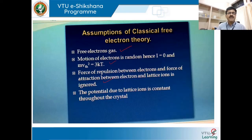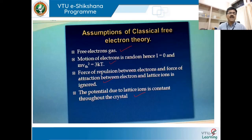The last assumption is that when you apply an electric field, the potential due to the lattice ions is assumed to be constant throughout the crystal — meaning the electric field is assumed to be constant throughout the entire crystal. These are the four assumptions made to explain the classical free electron theory.